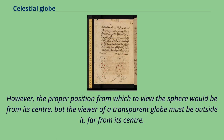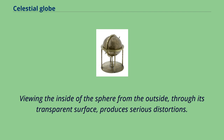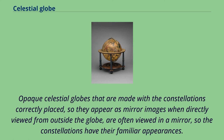However, the proper position from which to view the sphere would be from its center, but the viewer of a transparent globe must be outside it, far from its center. Viewing the inside of the sphere from the outside through its transparent surface produces serious distortions. Opaque celestial globes that are made with the constellations correctly placed, so they appear as mirror images when directly viewed from outside the globe, are often viewed in a mirror, so the constellations have their familiar appearances.